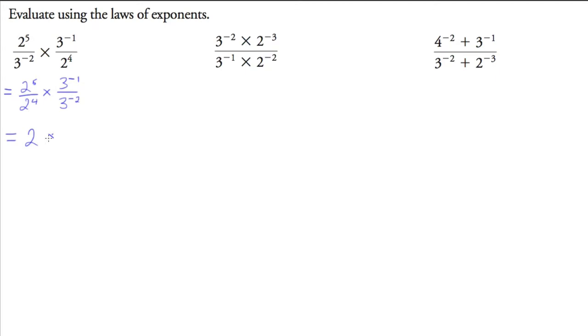And three to the negative one divided by three to the negative two. If you need to write it down in an intermediate spot, by all means go ahead. So it's negative one take away negative two, and negative and negative swaps it out. So it's negative one plus two, which is positive one. So we've got three to the one, and two times three is six.